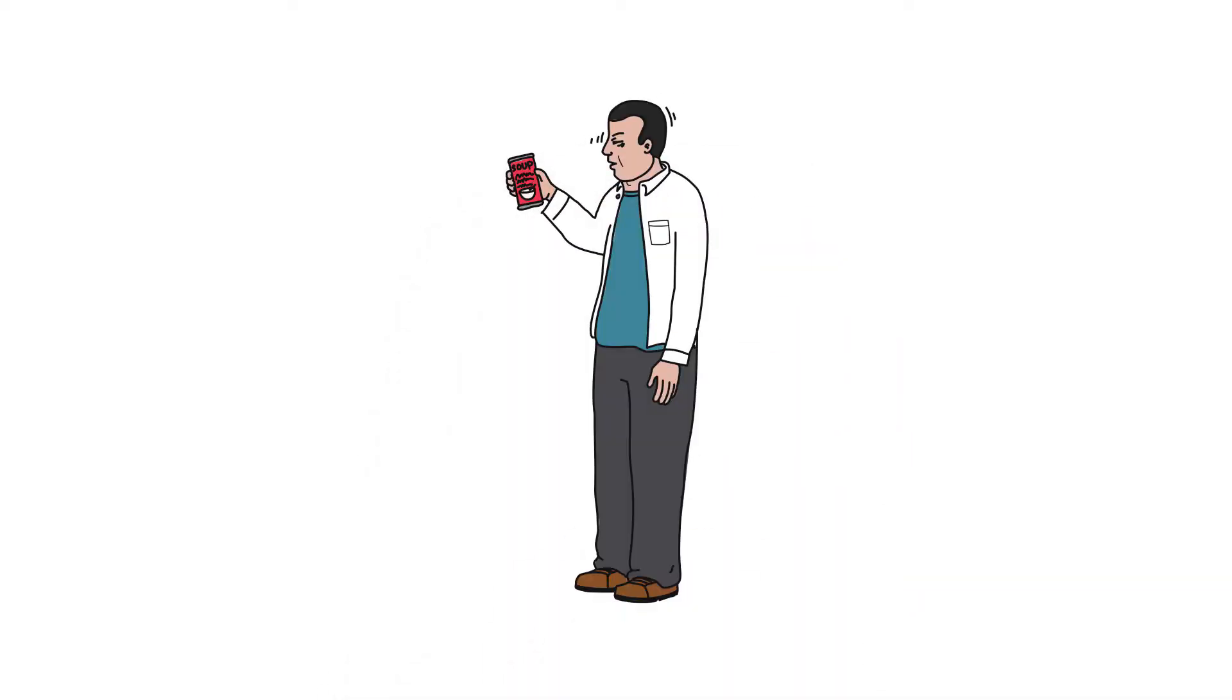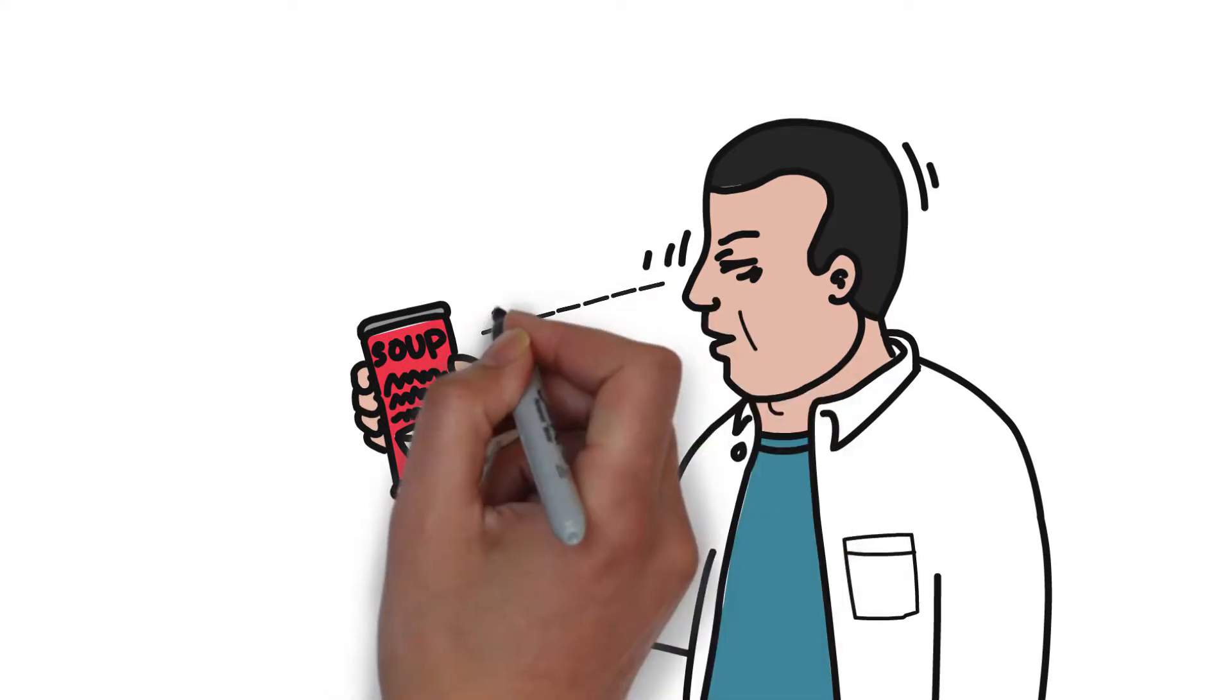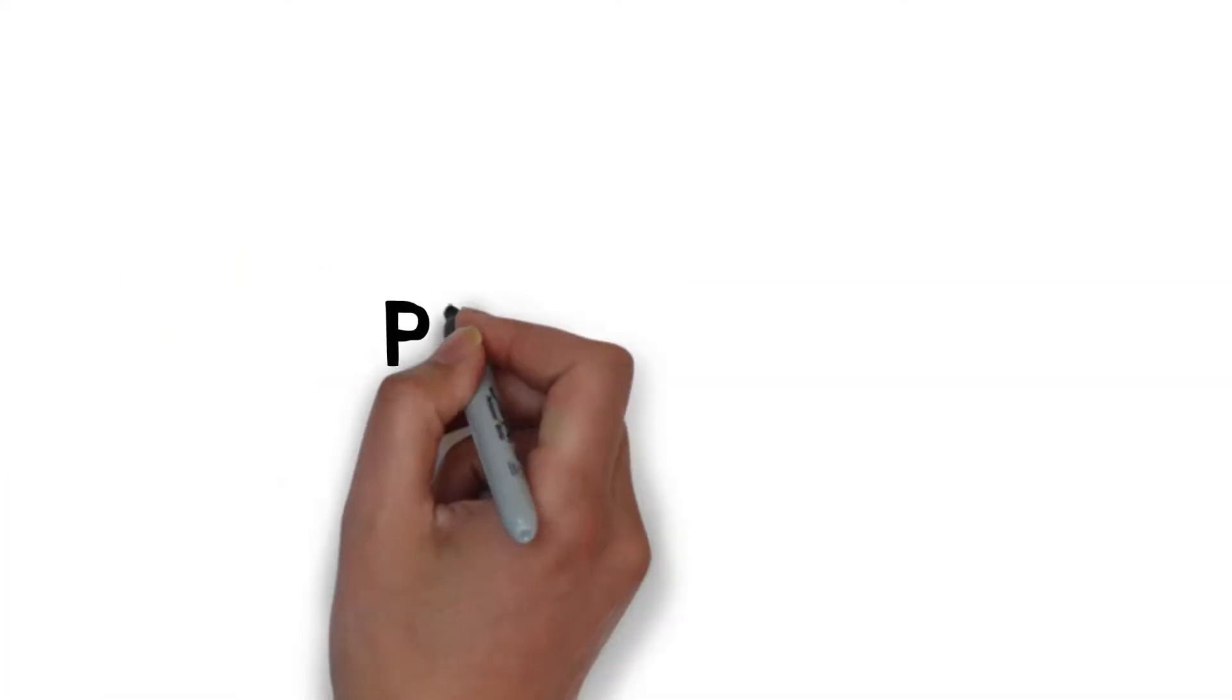As we age, the lens in our eye hardens and becomes less flexible over time, hindering our ability to focus on close objects. This condition is called presbyopia.